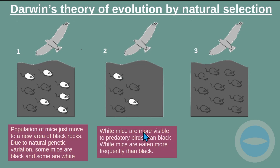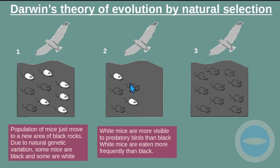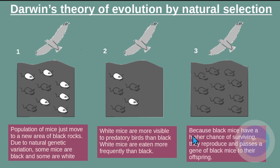The white mice are more visible to predatory birds than the black mice, so white mice are eaten more frequently. This condition is not favoring the white mice — they are more visible and eaten more often than the black mice.